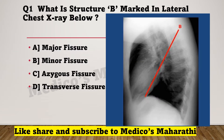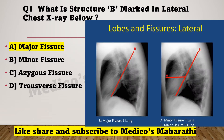The first question: what is structure B marked in a lateral chest X-ray? You have to tell what this B-marked structure is. The correct answer for this question will be major fissure. Here you can see both left lung and right lung. The left lung has only one fissure, that is the major fissure, but the right lung has two fissures — major fissure and minor fissure.